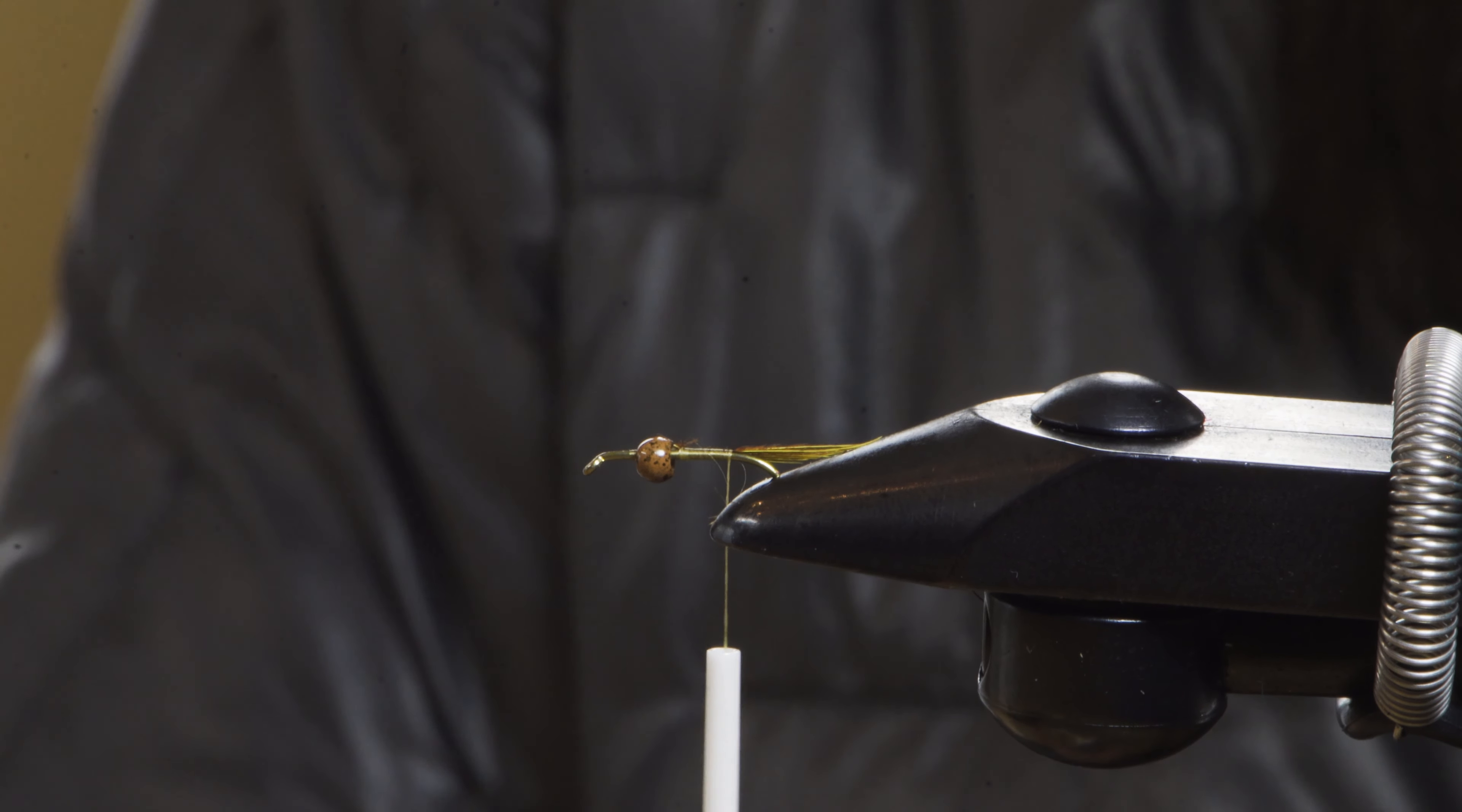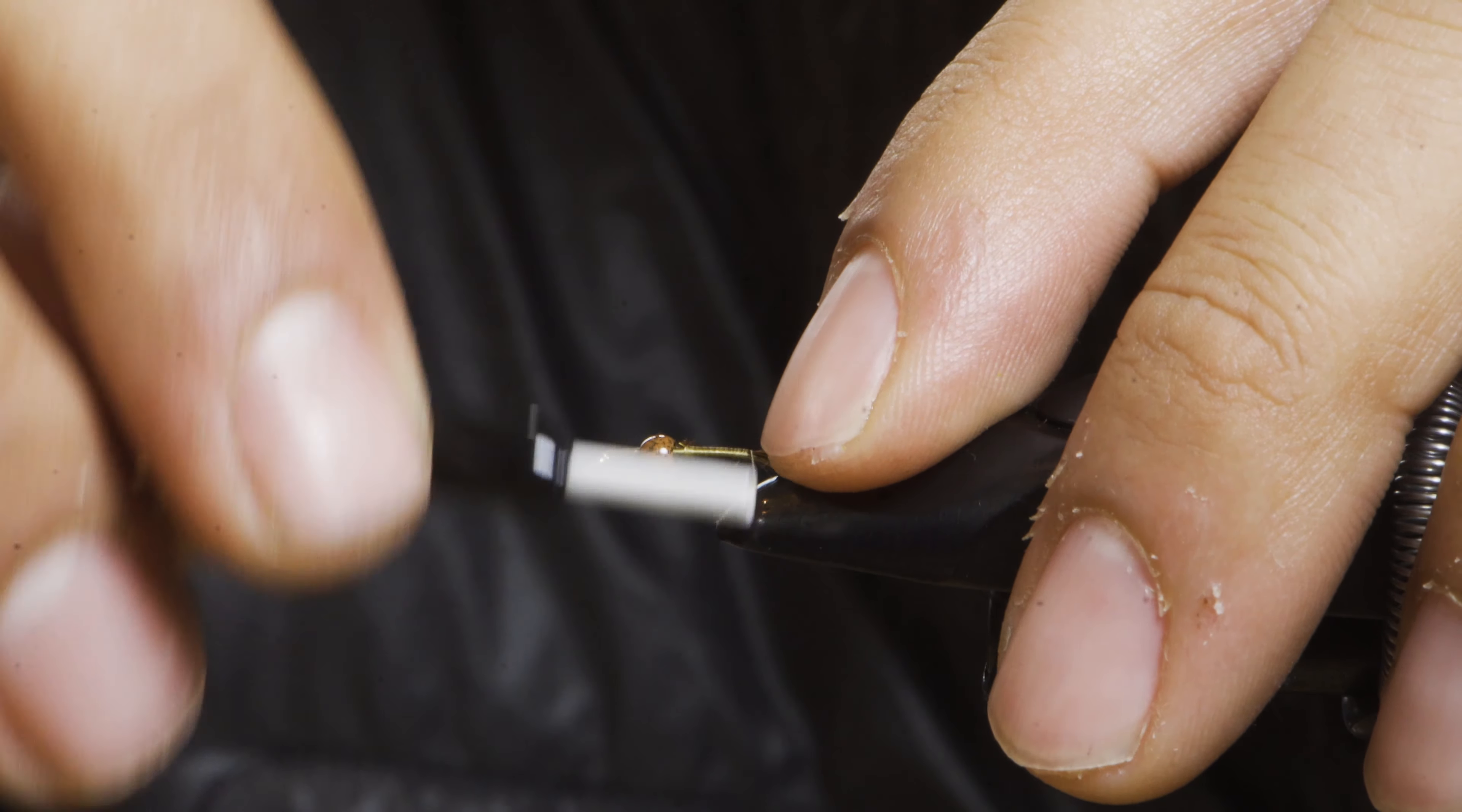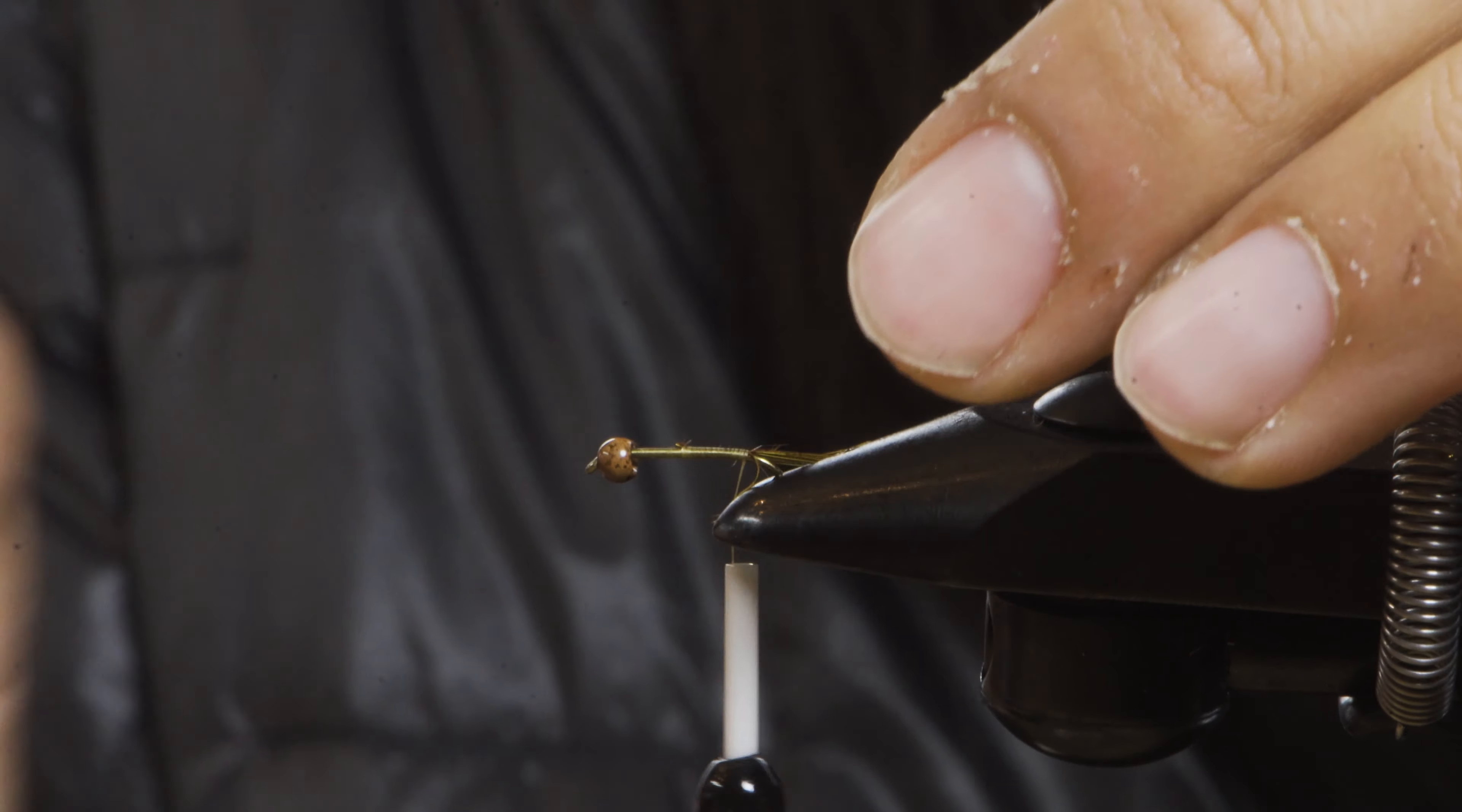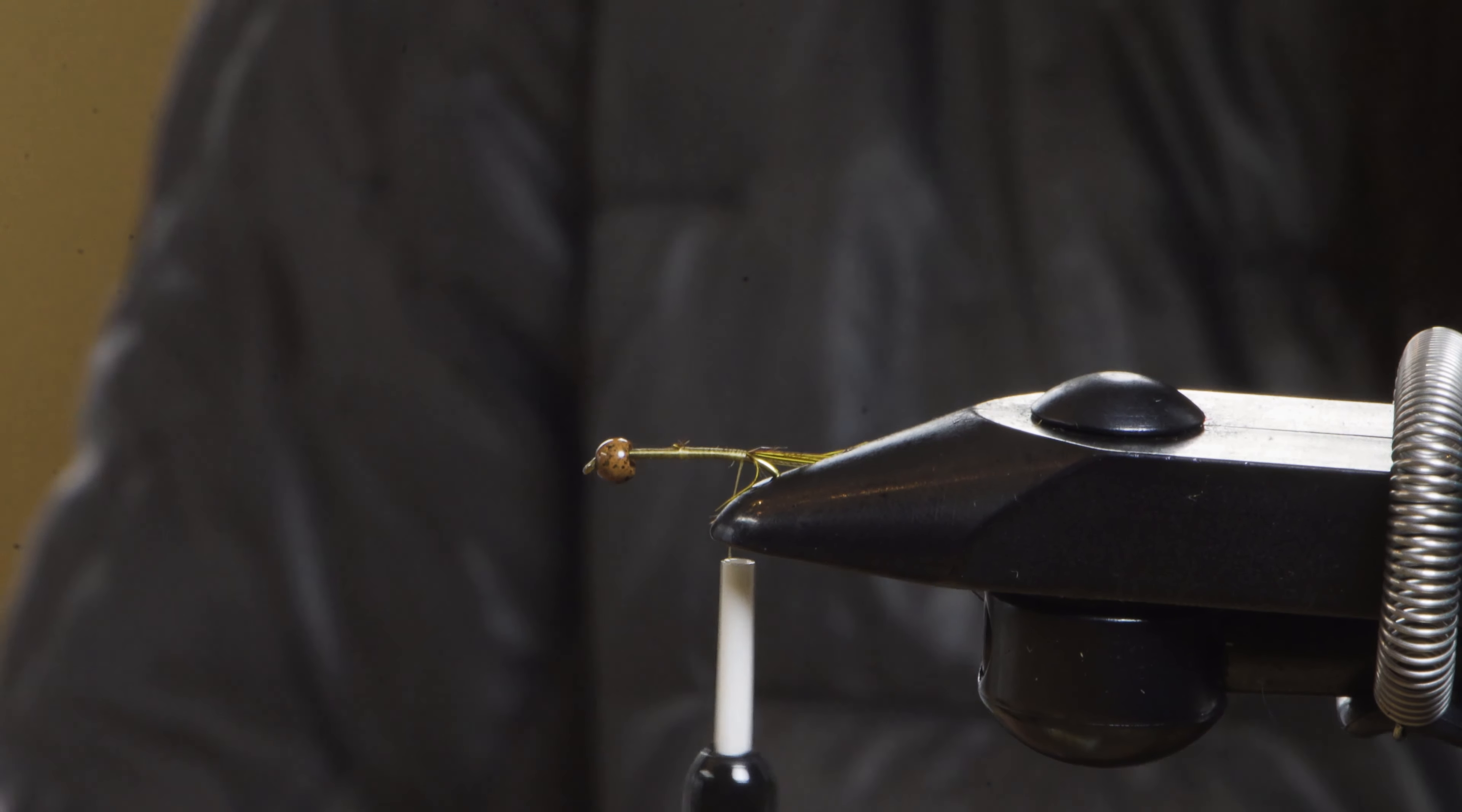I'm going to save this clump for later. Come all the way back to the bend in the hook. Take that clump we just removed. Make sure your tips are all lined up.